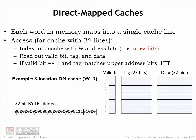The simplest cache hardware consists of an SRAM with a few additional pieces of logic. The cache hardware is designed so that each memory location in the CPU's address space maps to a particular cache line, hence the name Direct Mapped Cache.